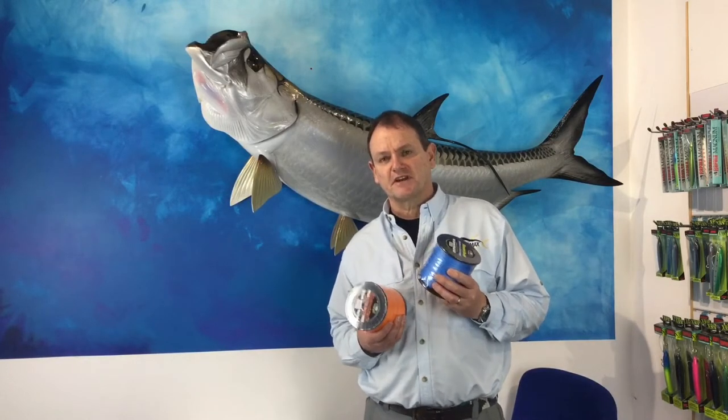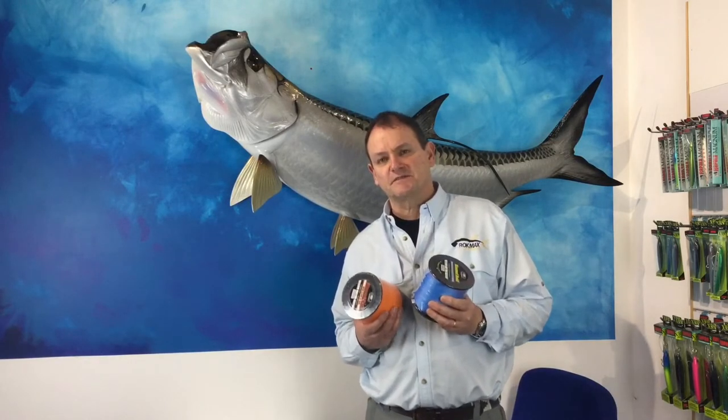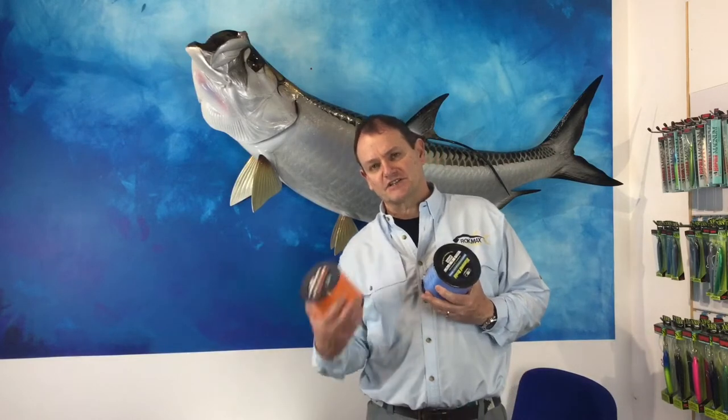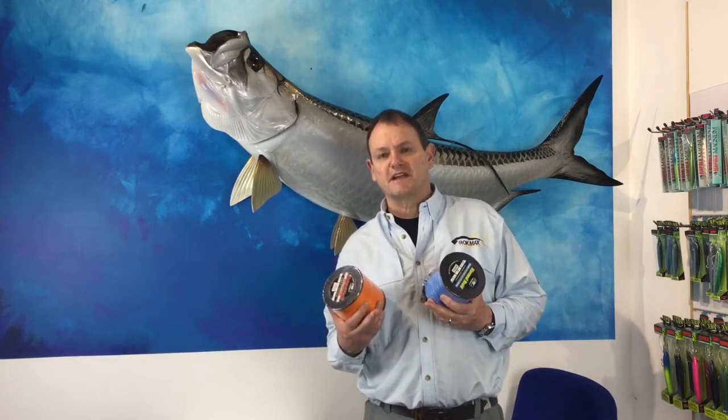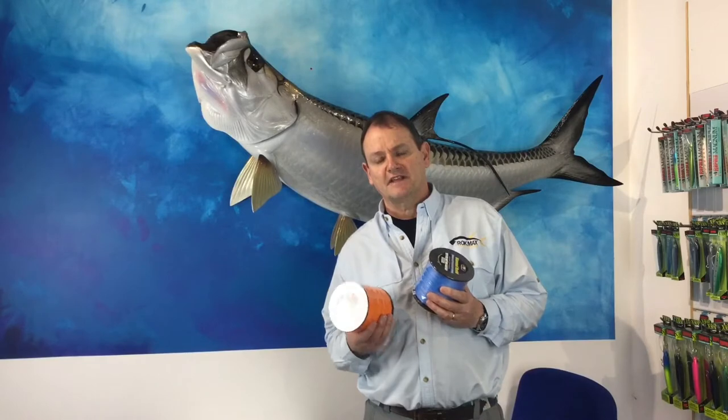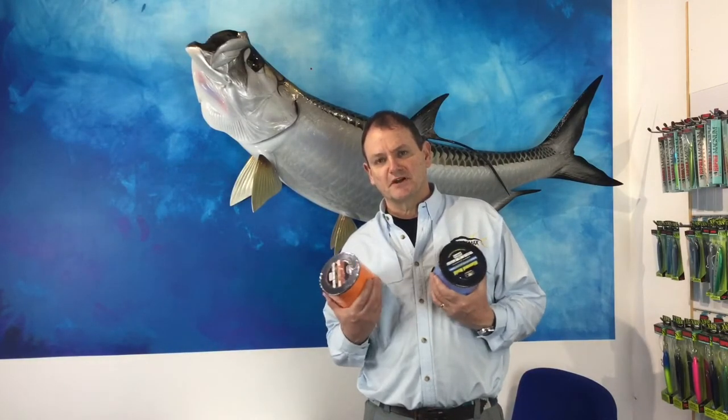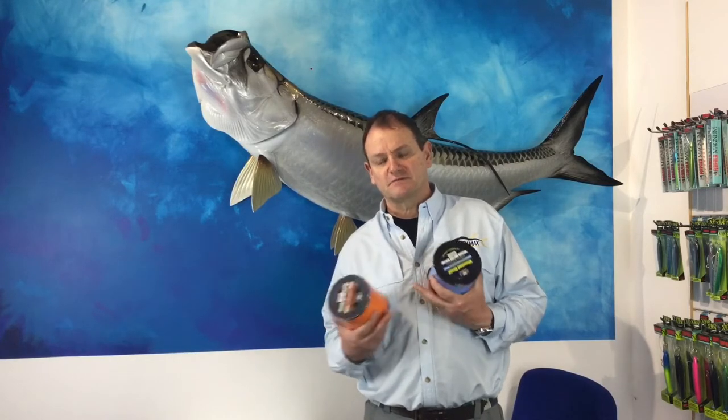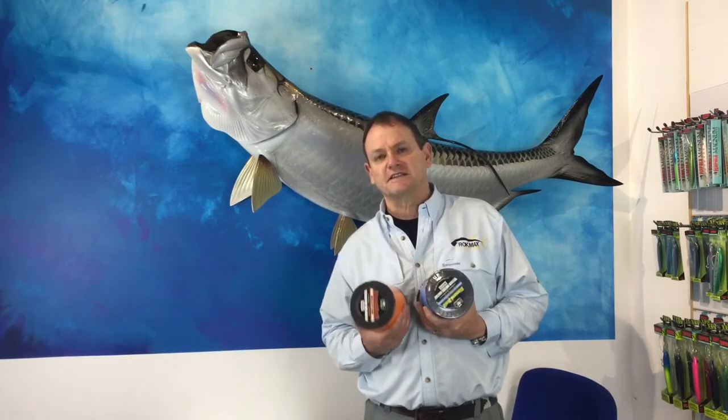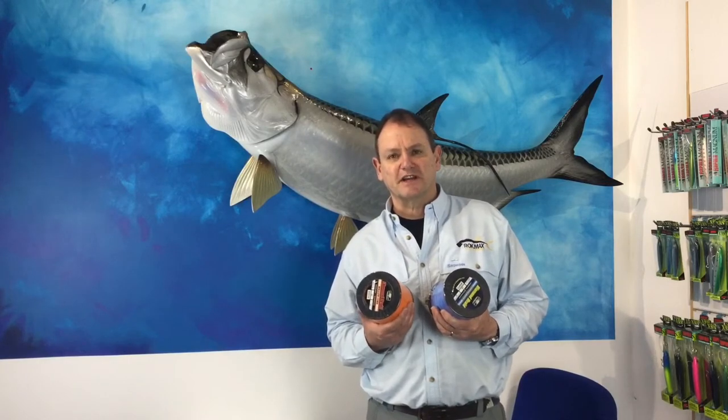The first one I'm going to show you how to make a loop in the end of the braid and then how to attach that loop to a pre-made top shot. The second video we're going to look at actually splicing mono inside the hollow core. I'll show you the tools that you need, how to do it, and these knots will give you 100% breaking strain.